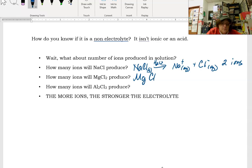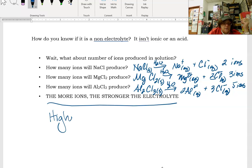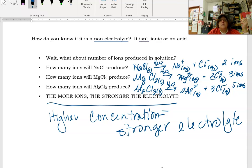MgCl2, when we put it into water, it's going to make magnesium ions and chloride ions. One magnesium and two chlorines, so it's going to make three ions. Aluminum chloride is going to make aluminum ions and chloride ions. So that's a total of five ions. The more ions you have, the stronger the electrolyte. The higher the concentration, stronger electrolyte. That's it.